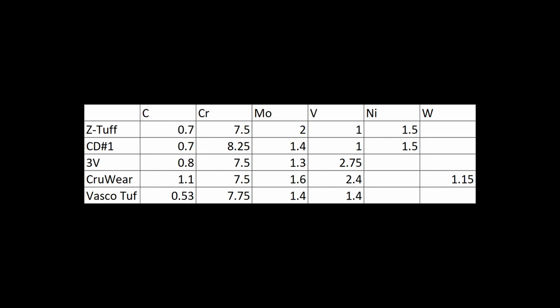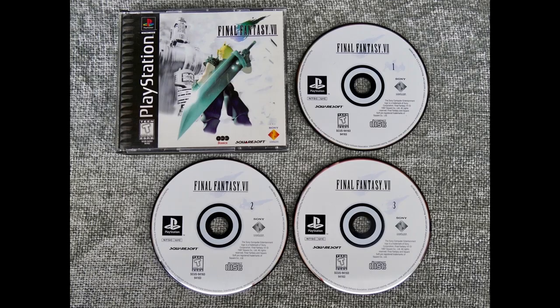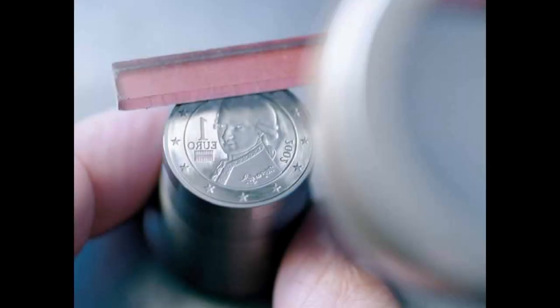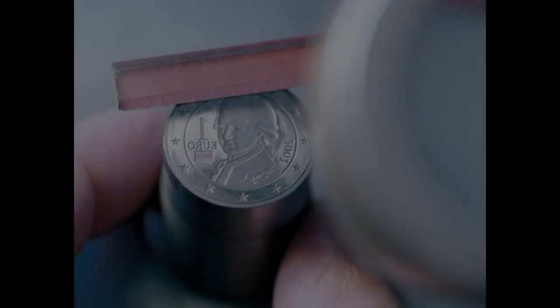Now, CD#1 came first before Z-Tuff. CD#1 is a product of Carpenter, and objectively, Z-Tuff is the better name. I mean, we can all agree that CD#1 is a really boring name. CD#1 is what you put in your PlayStation when you're playing Final Fantasy VII, not a steel you want to buy in a knife. Now, CD does stand for Coining Die, which is slightly better than CD, because Coining Dies need high toughness.